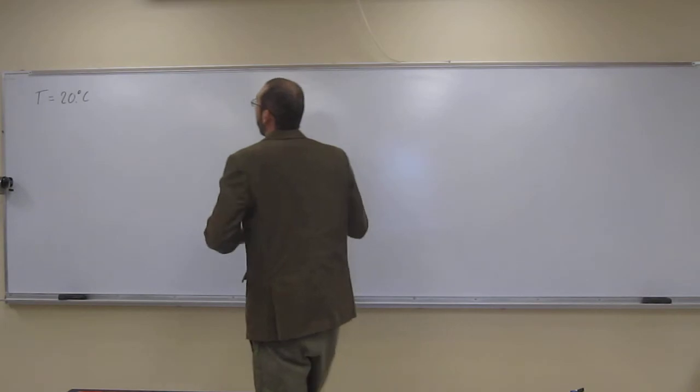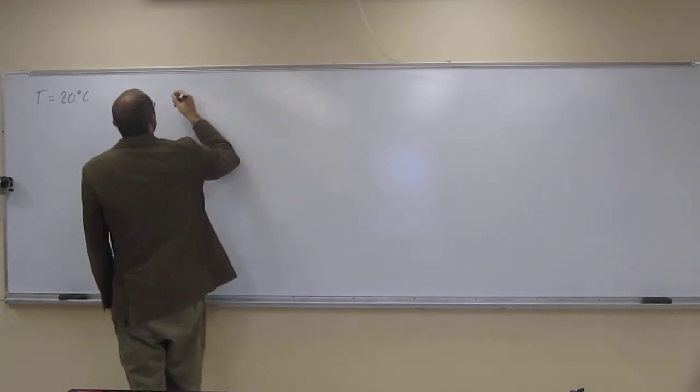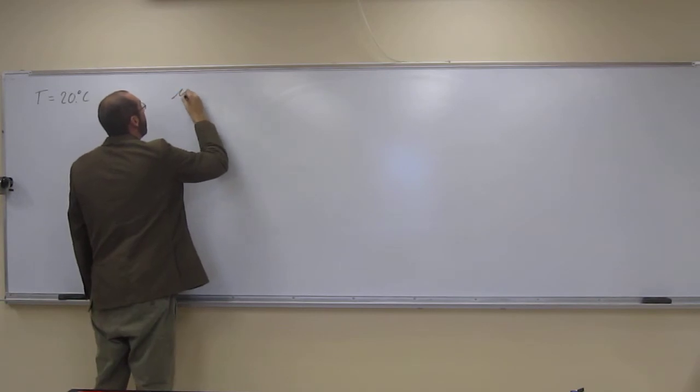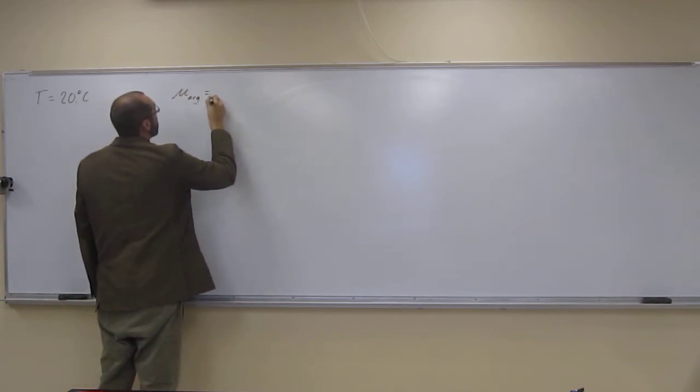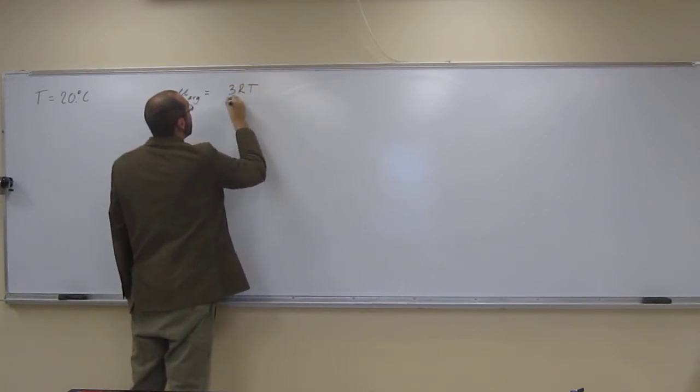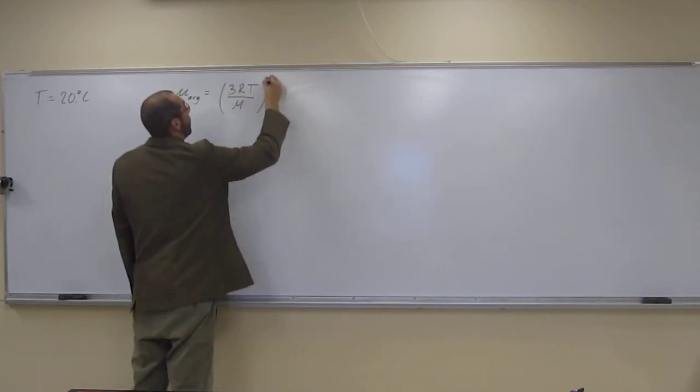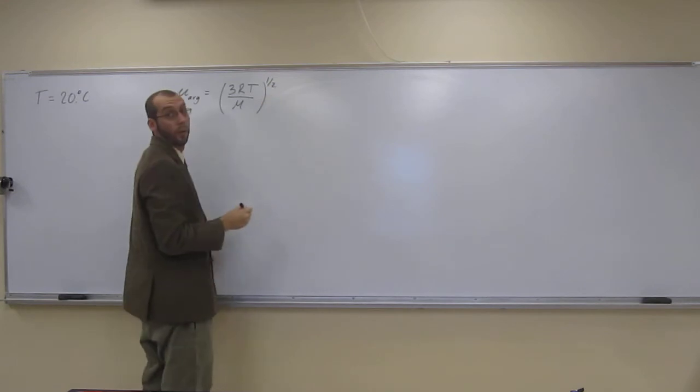So in order to do that, of course, you need to know, well, what is the root mean squared formula? So mu average or root mean squared is going to be 3RT divided by molar mass to the one-half, so square root.